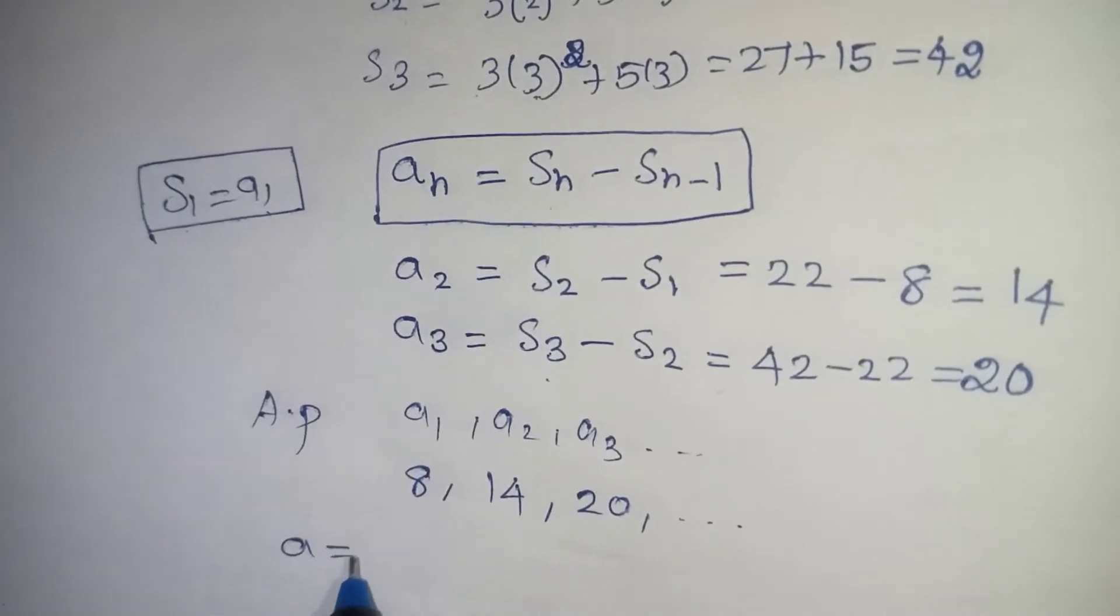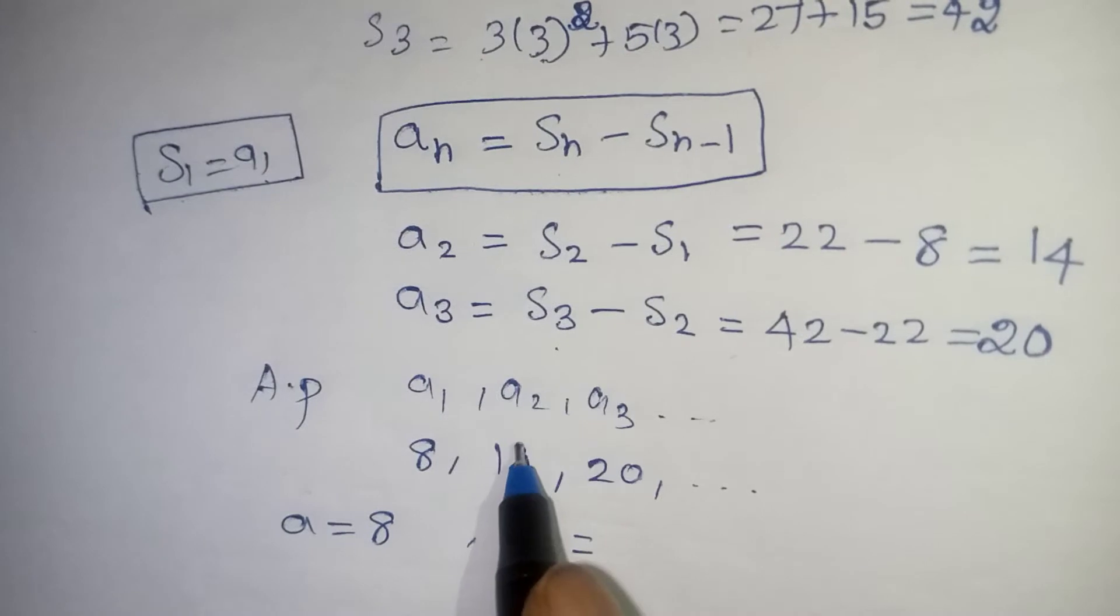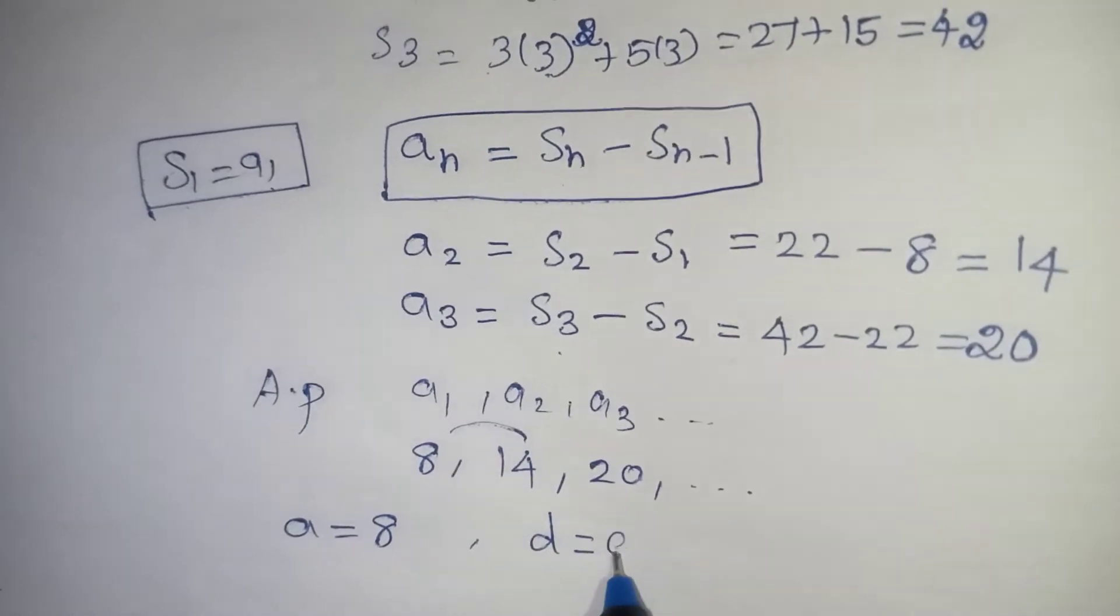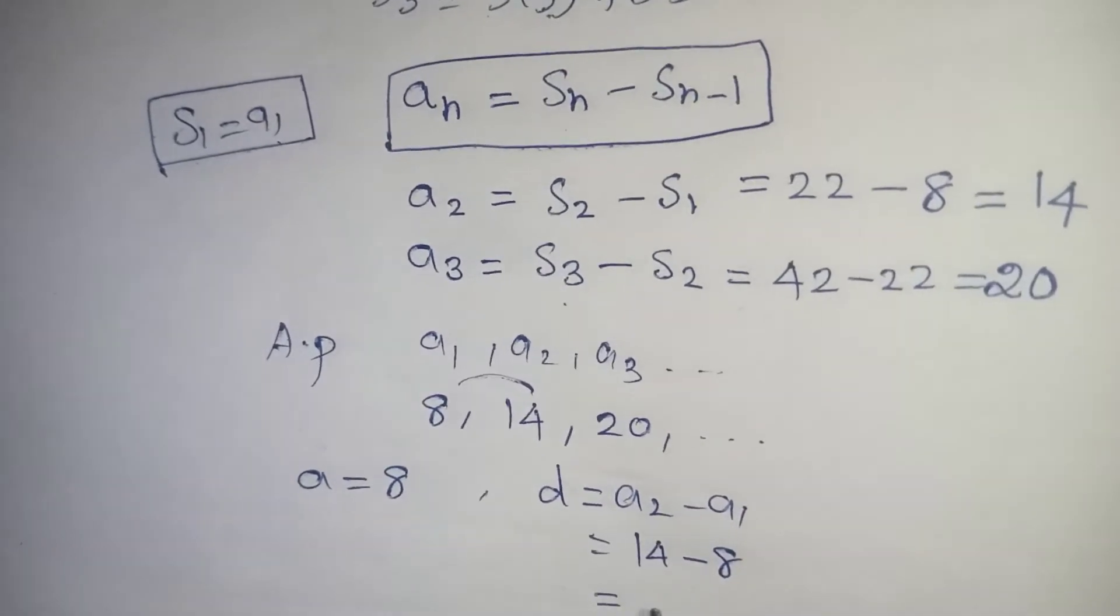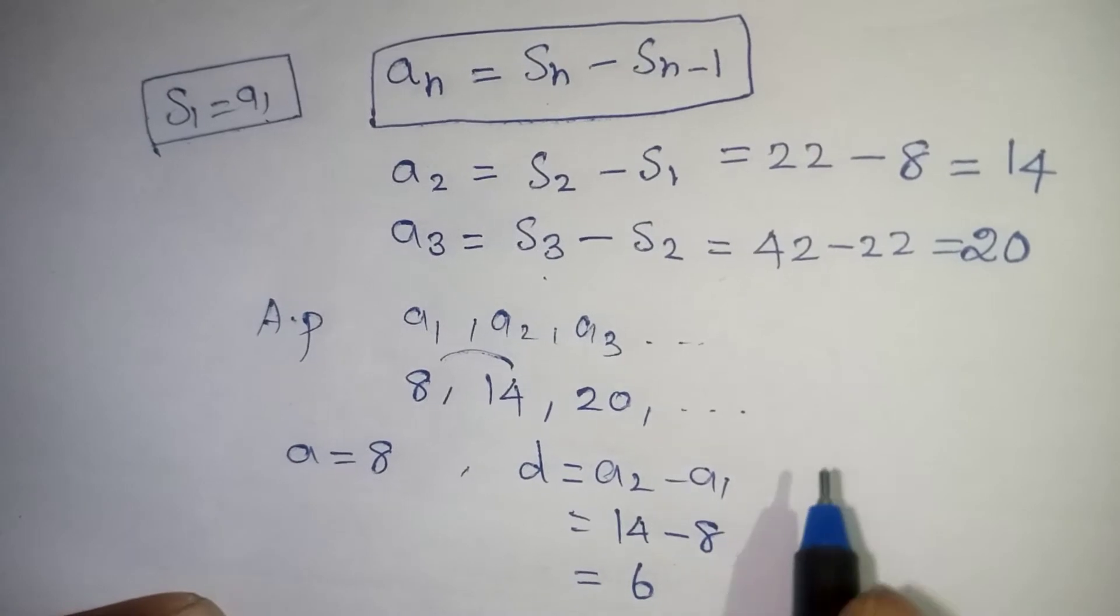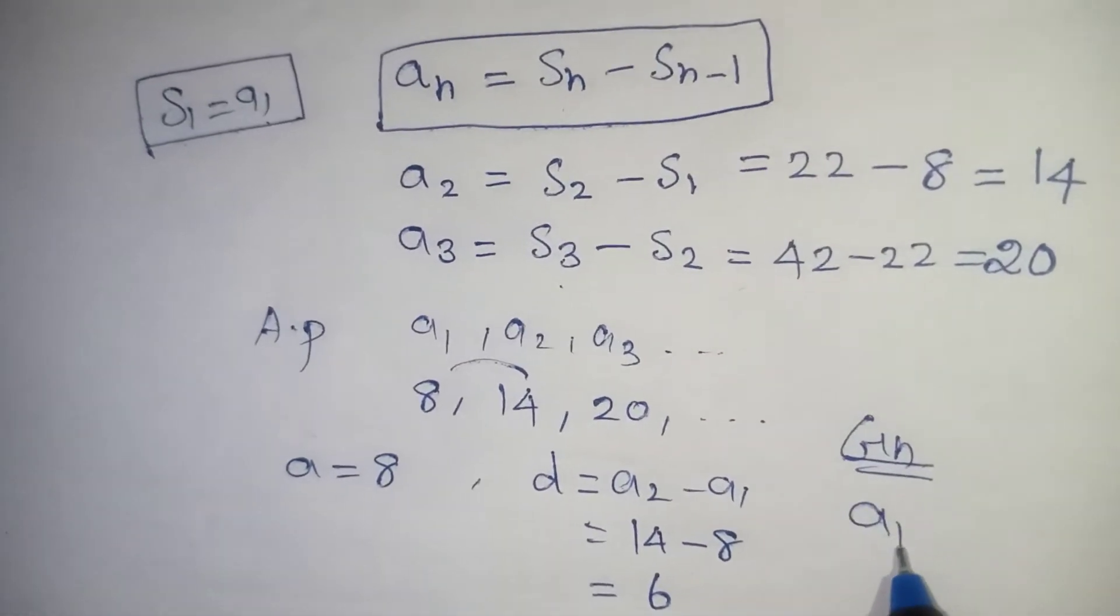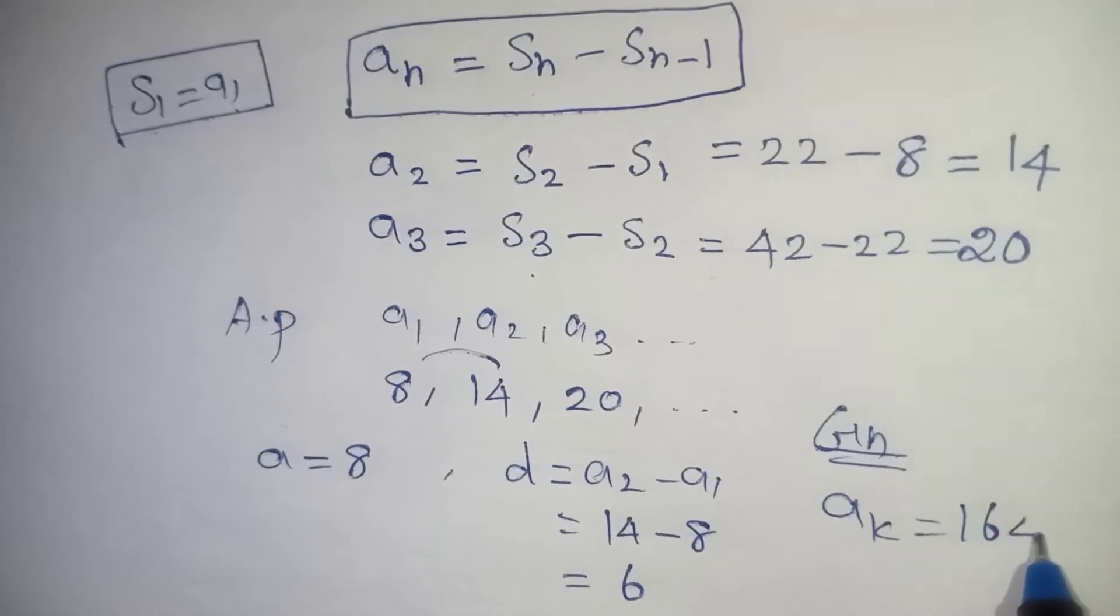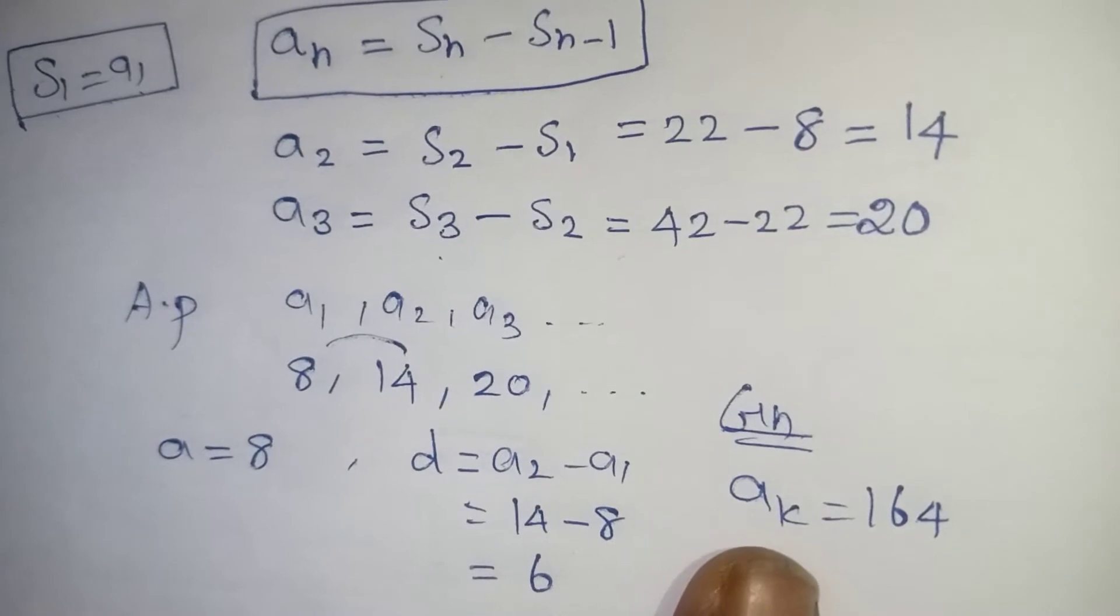Now the first term will be taken as A, so 8. And difference is nothing but subtract the second term and the first term, that is A2 minus A1. So that is 14 minus 8, that will give you 6. Now we got what is our D also. Now in our question they have given us AK is equal to 164. AK looks like in the form of AN.